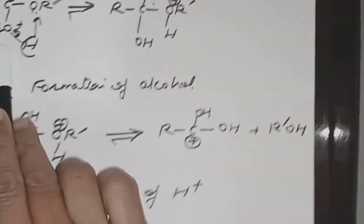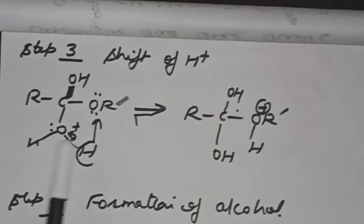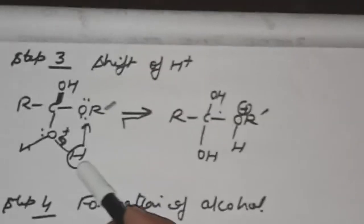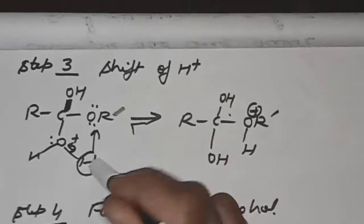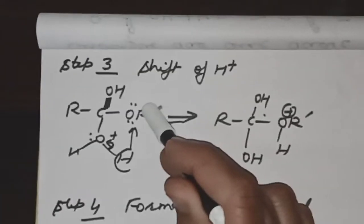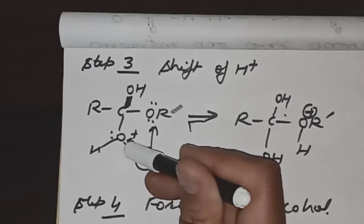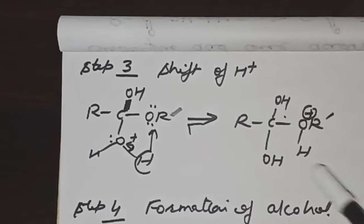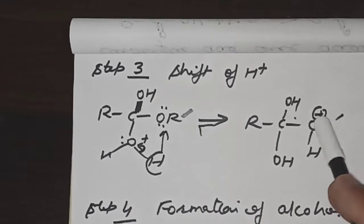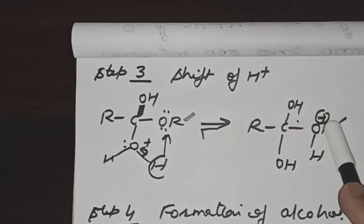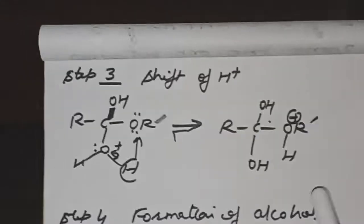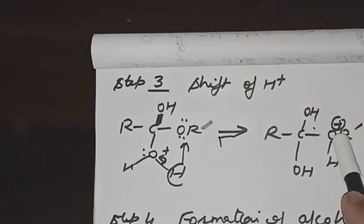Step 3 is the shift of H+. Because the oxygen has a positive charge, in order to balance it, a hydrogen shifts as H+ to the OR group, which is the alkoxy group. The positive charge on the first oxygen gets balanced, and the oxygen of the alkoxy group now acquires a positive charge with a hydrogen attached to it.